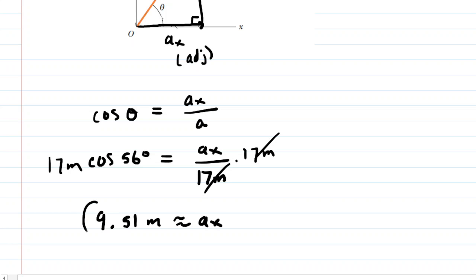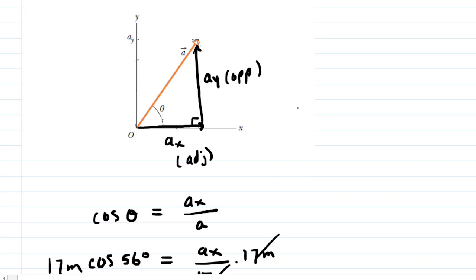So this is the correct answer for part A. We'll come back up here and look at part B, which wants the Y component. So this time we'll use the sine function. We know the sine of that angle theta is equal to the side that is opposite, which is A sub Y, over the hypotenuse, which is A. We fill in the same data as before.